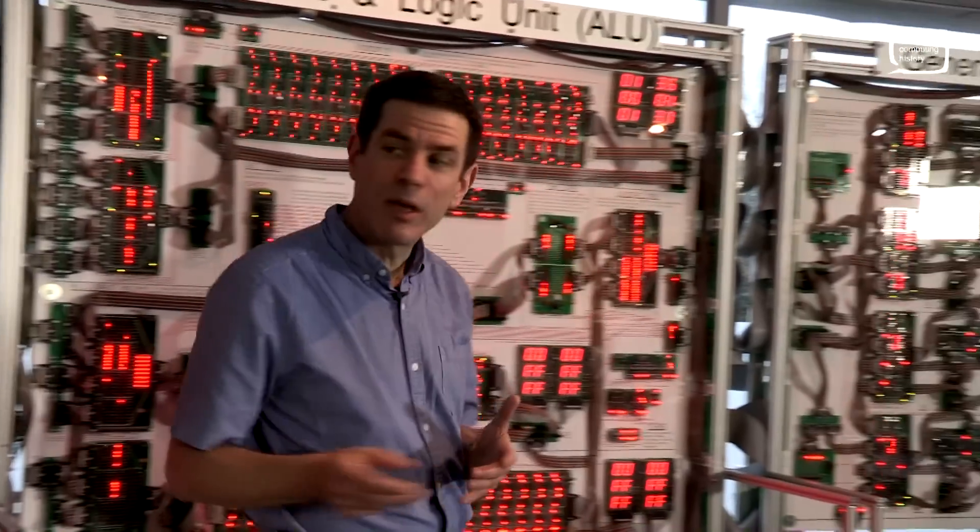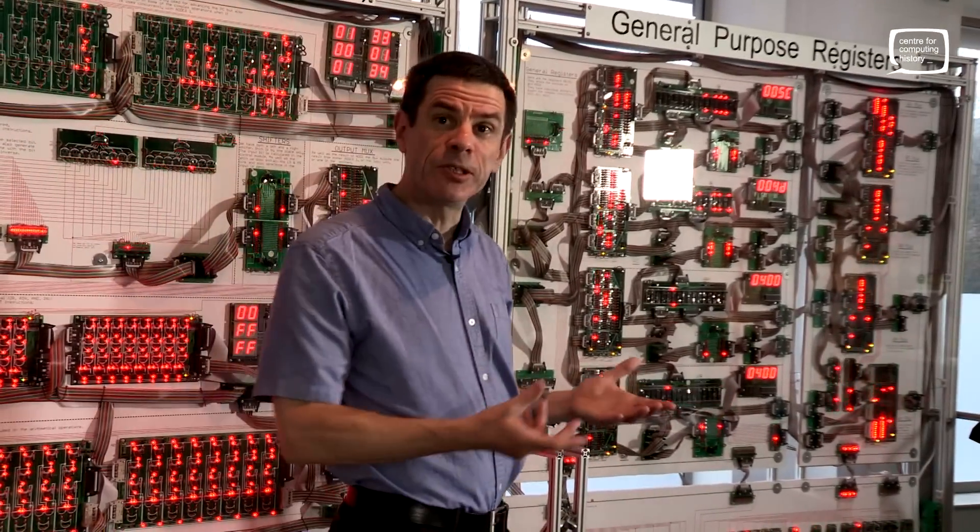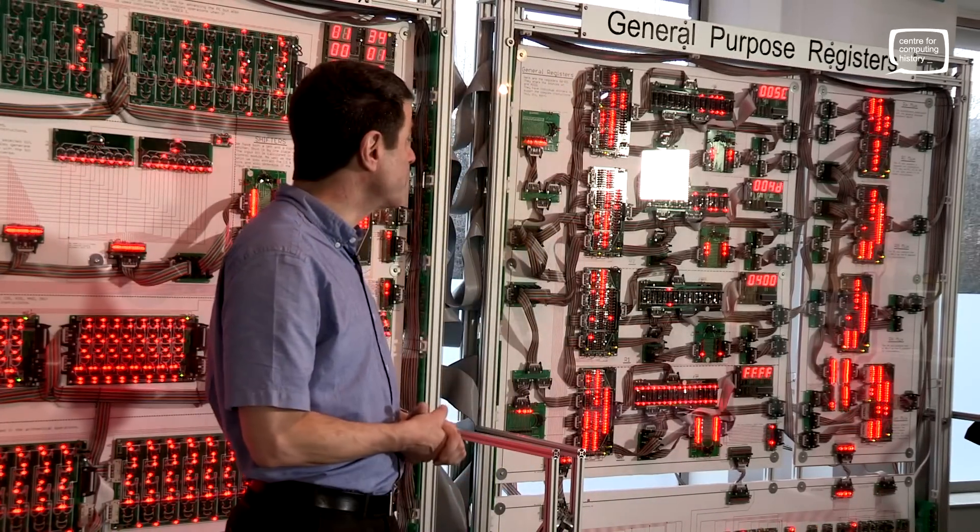Quite often, the instructions are arithmetic things, like add two numbers together. And the numbers that the machine operates on are stored in registers. And these are the registers up here. We have four general purpose registers.